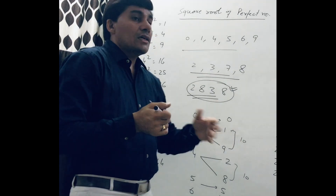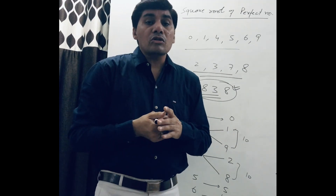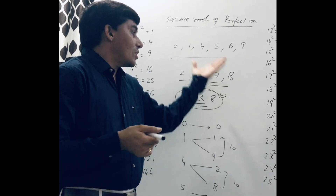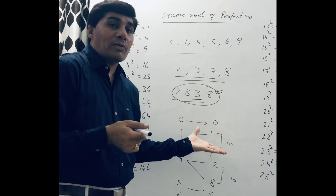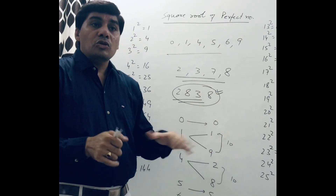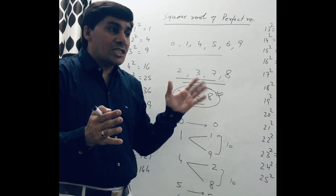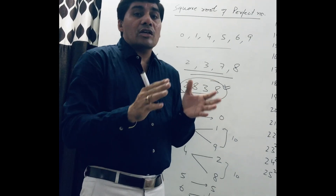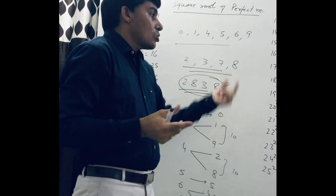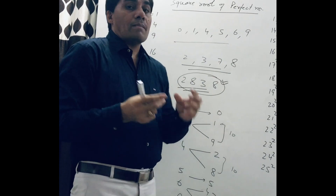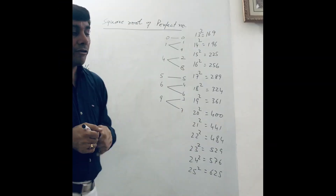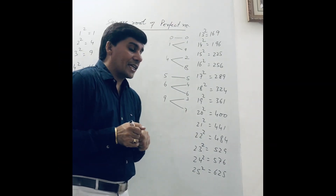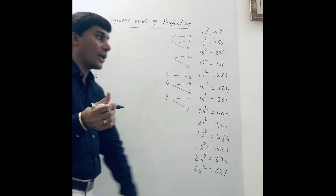Now we have to find the square root of perfect square numbers. With the help of examples, you can learn easily and find the square root within seconds using some short tricks. Now we can solve an example — a very simple one.